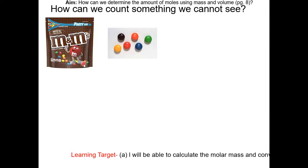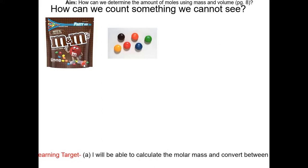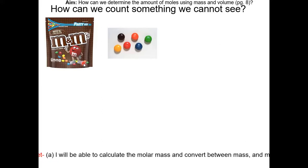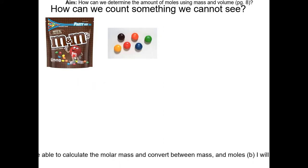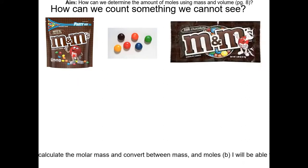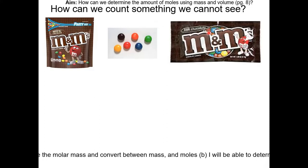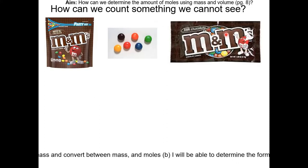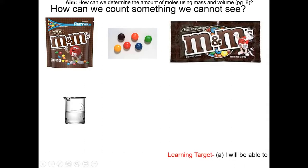The math will be: the mass of the M&Ms without the bag divided by the mass of 1 M&M. That gives you the number of M&Ms in the bag. You can apply the same math to a different bag of M&Ms, assuming the same type.